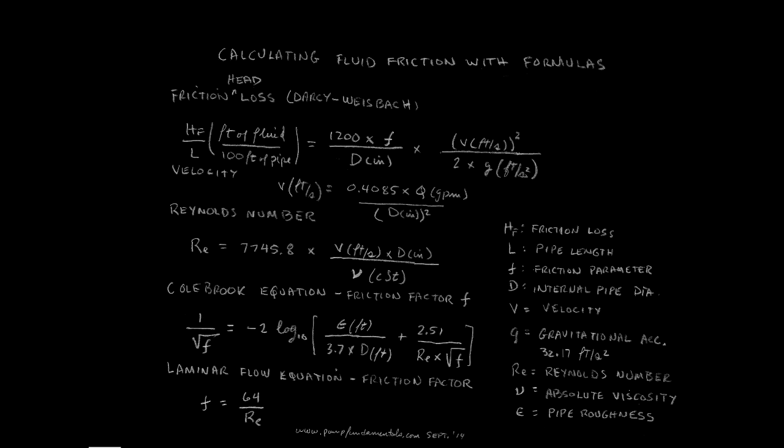The third one is the Colebrook equation, which is the heart of the matter. It tells us what the friction factor is depending on the roughness of the pipe, the Reynolds number, and the pipe diameter.